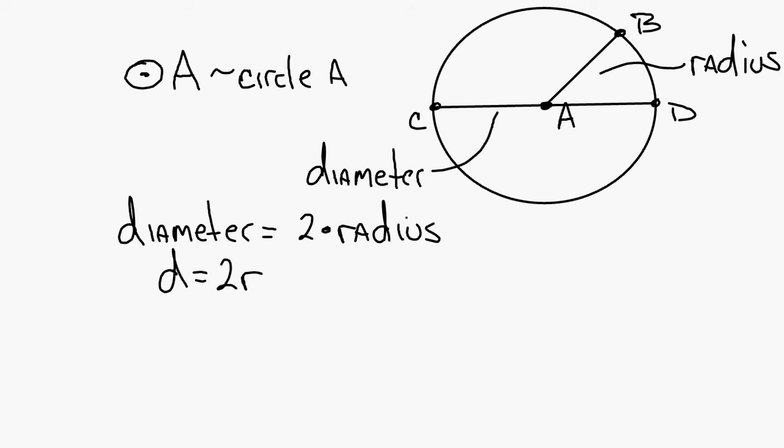The radius is equal to one-half times the diameter. So R equals diameter divided by two.